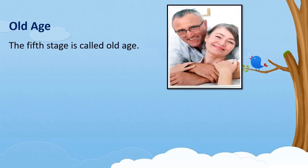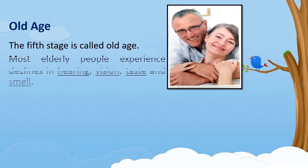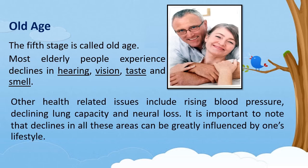The last stage of human growth and development is old age. During old age, there is a loss in weight, and most elderly people experience declines in hearing, vision, taste, and smell. These declines are typically gradual and become more pronounced in late old age, around age 70 and beyond.